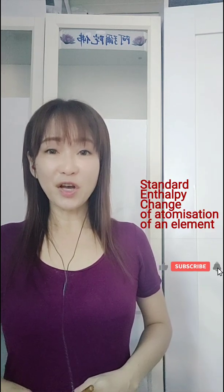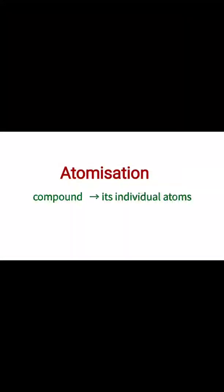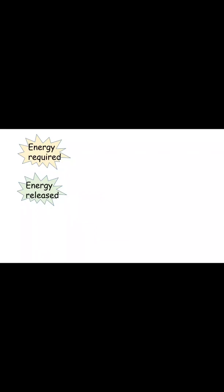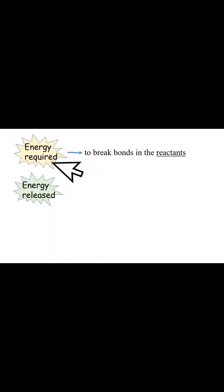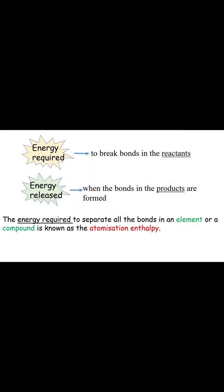Let's look at the first part: the definition of the standard enthalpy change of atomizations. As can be seen from the name, atomization means converting a compound into its individual atoms. Therefore, the enthalpy change for a chemical reaction can be deduced from the energy required to break bonds in the reactants and the energy released when bonds in the products are formed. The energy required to separate all the bonds in an element or compound is known as atomization.